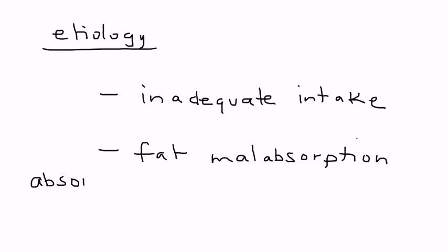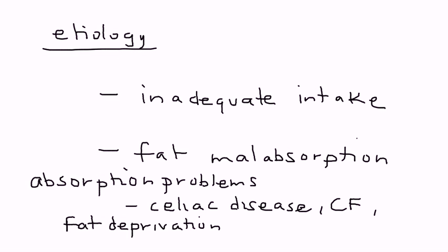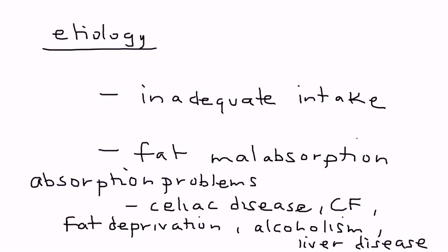Absorption problems have a long list of associated diseases. For example, celiac disease, cystic fibrosis, and any kind of fat deprivation state, because fat is needed to absorb vitamin A since it's a fat-soluble vitamin. Alcoholism can also interfere with absorption, as can liver diseases.